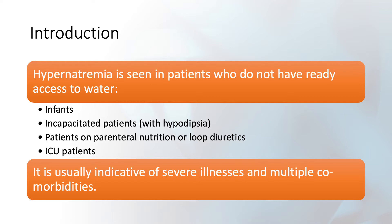We also see hypernatremia in people who are incapacitated, especially when their thirst mechanism is not intact — this is what we call hypodipsia. People on parenteral nutrition are at risk, which is very common in the hospital because sometimes you're not giving them enough water. People on loop diuretics are also very commonly affected. Patients in the ICU cannot get up and drink water. Hypernatremia is indicative of a severe illness with multiple comorbidities.